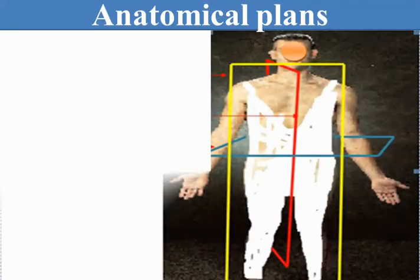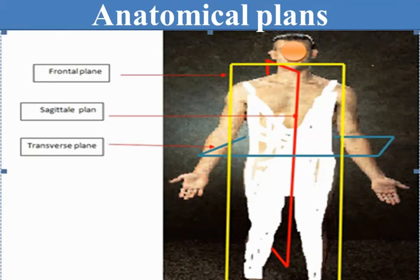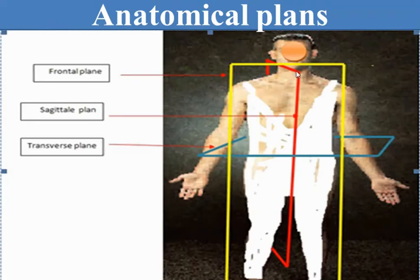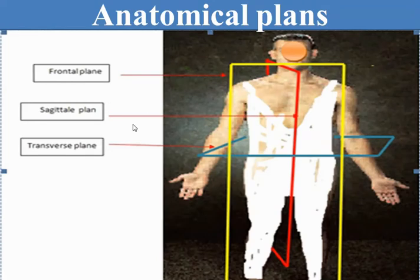To study anatomy, we must also have anatomical planes. These are imaginary planes, and here you can see we have three main planes. The first is the frontal plane, shown in yellow, which divides the body into a backward and a forward part. The second is the sagittal plane, shown in red, which divides the body into two equal left and right parts. Finally, we have the transverse plane, which divides the body into upper and lower parts.